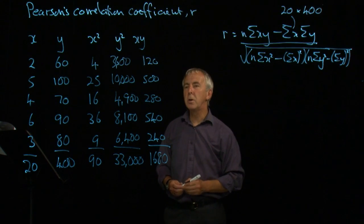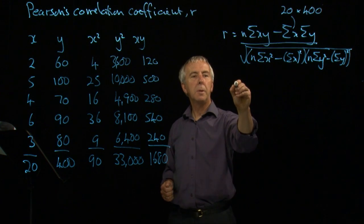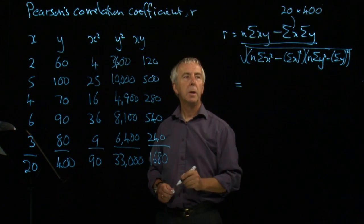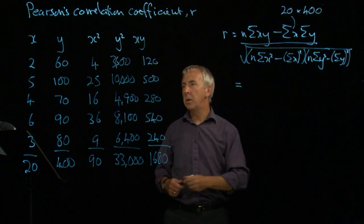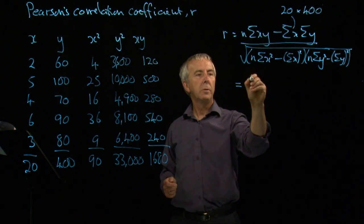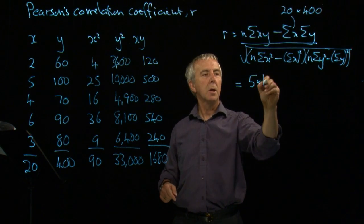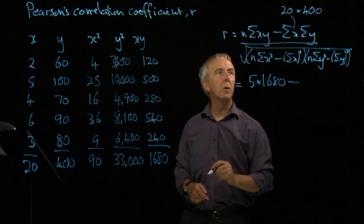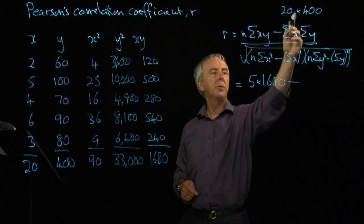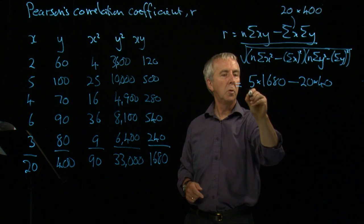So those are the calculations that we need to do to get the totals. We then put it all in this formula, where n is the number of items. Here we've got five different items. So we get five sigma xy, which is 1680, take away sigma x times sigma y, 20 times 40.